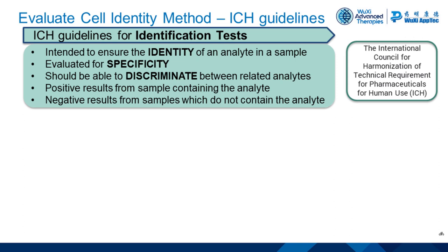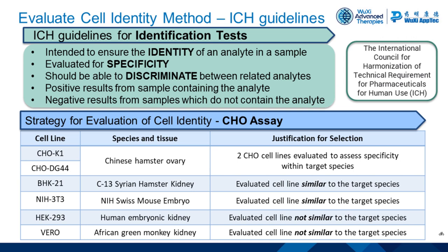We've conducted a thorough evaluation of the cell line identity method following ICH guidelines, which state that identity tests are intended to ensure the identity of an analyte in a sample. Identity tests should be evaluated for specificity — a test should be able to discriminate between related analytes, give positive results for samples containing the analyte, and negative results for samples not containing the analyte. To evaluate the CHO assay, we tested six cell lines. CHO K1 and CHO DG44 were evaluated to assess specificity within the target species. Deering hamster, BHK, and mouse NIH 3T3 were selected as cell lines similar to the target species, and human and Vero cells as cell lines not similar to the target species.